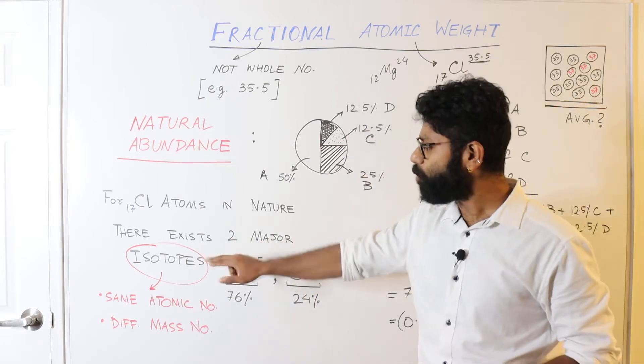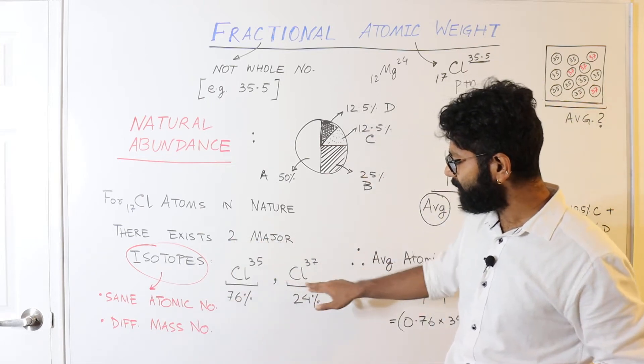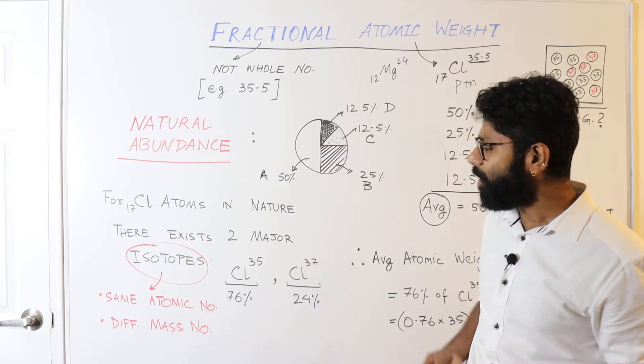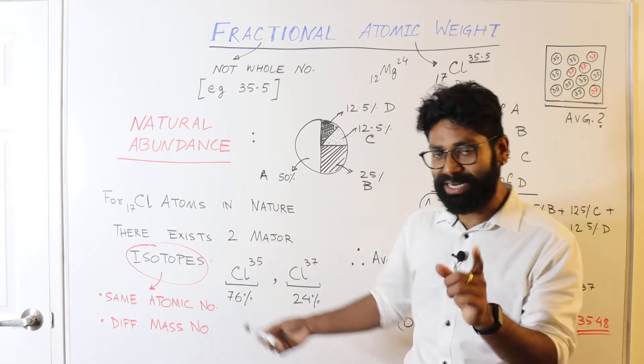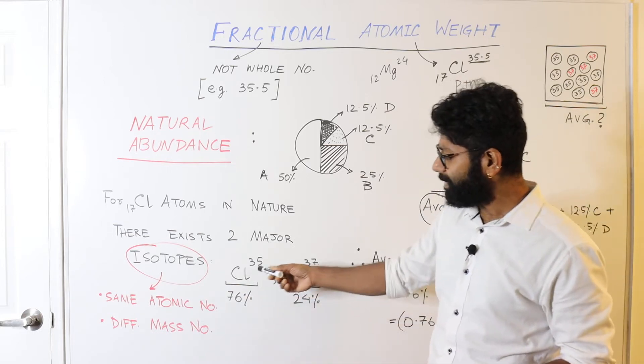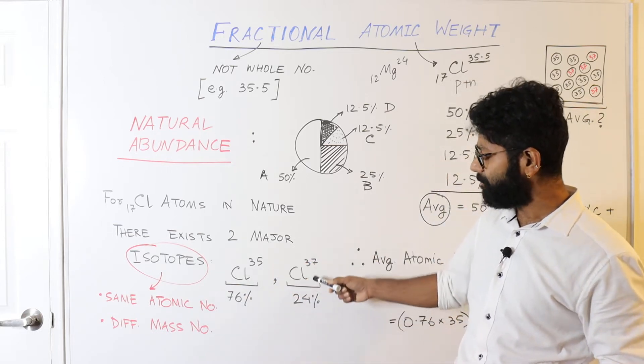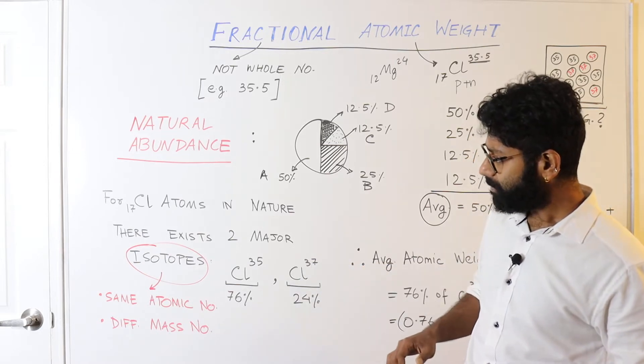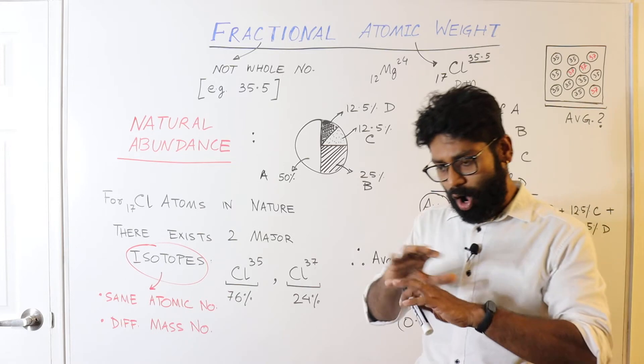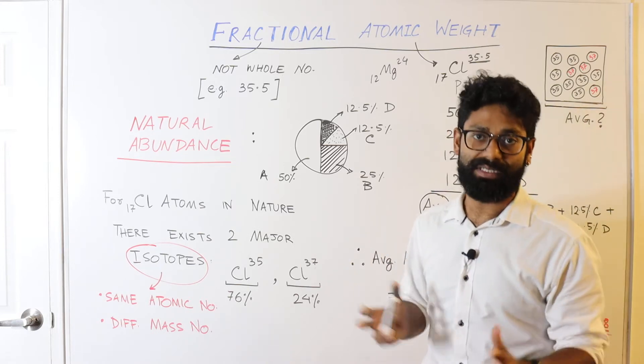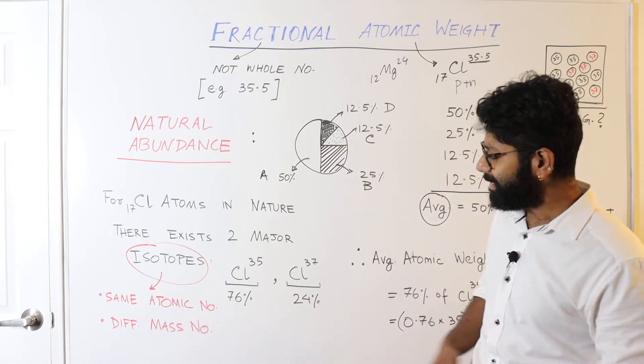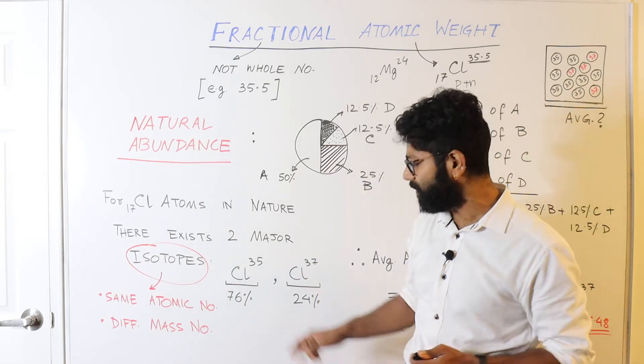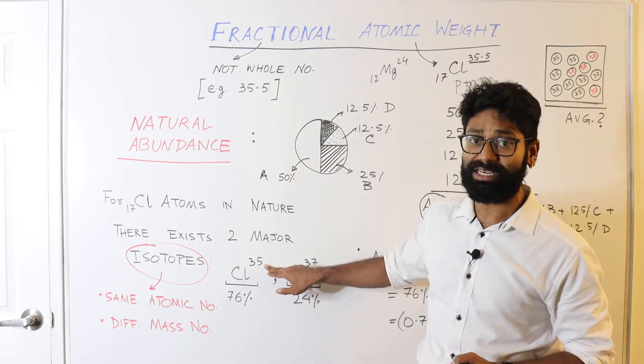For example, chlorine has two isotopes: chlorine-35 and chlorine-37. When I'm telling chlorine, by default I mean that the atomic number of chlorine is 17. But the mass number in here is 35, while the mass number in here is 37.